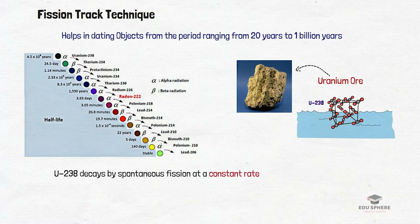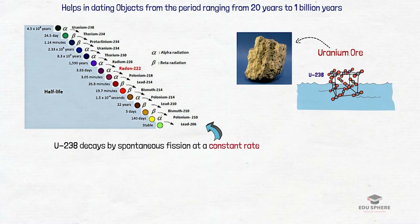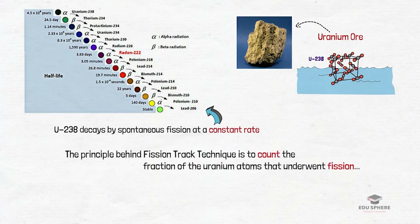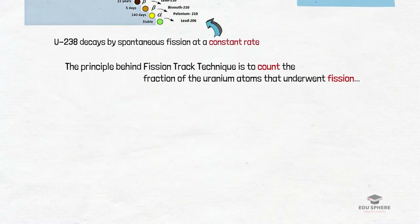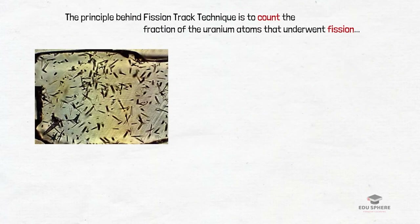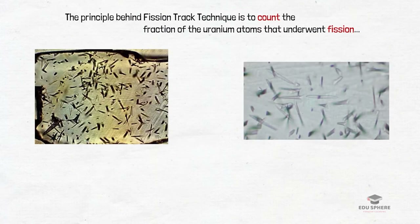The major isotope of uranium, uranium-238, decays by spontaneous fission at a constant rate. If the fraction of uranium atoms that underwent fission could be counted, then the age of the rock can be determined. This is the principle behind the fission track technique. The fragments produced by fission of a uranium nucleus create a single narrow but readily detectable trail of intense damage known as fission tracks.